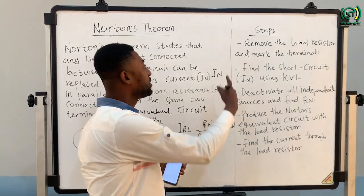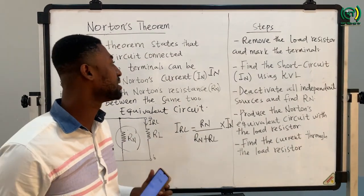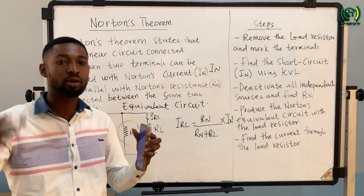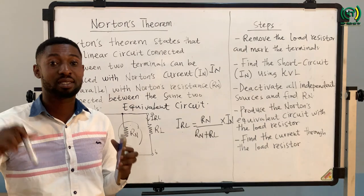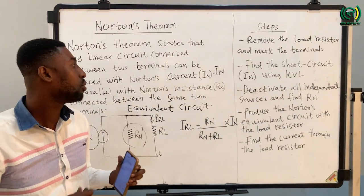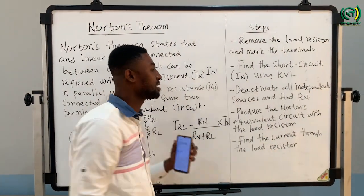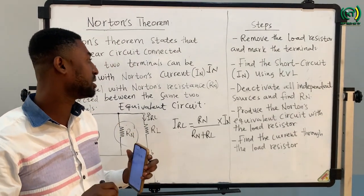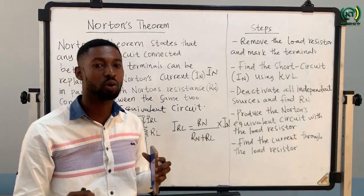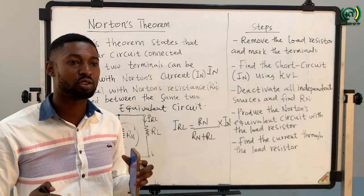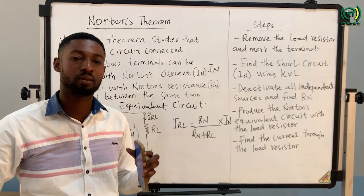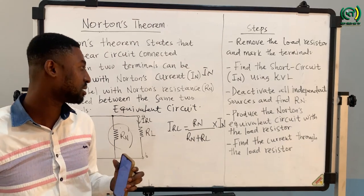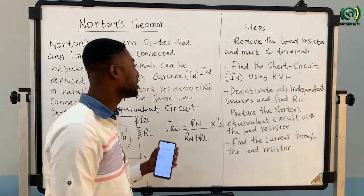The first step is to remove the load resistor and mark the terminal. Whenever the question asks you to find the current flowing through a particular resistor, that resistor becomes your load resistor — remove it and mark the terminal. Then you find the short circuit current using Kirchhoff's voltage law. When you mark the terminals, you represent it as a short circuit, then find the current flowing through that short circuit path.